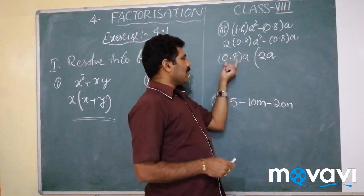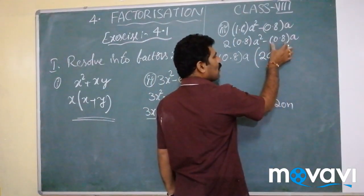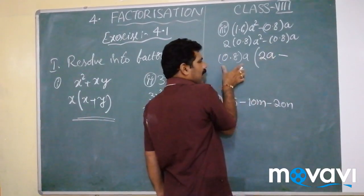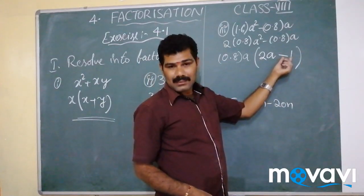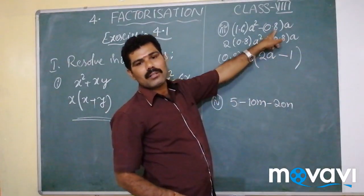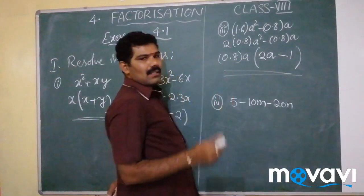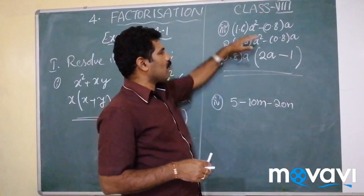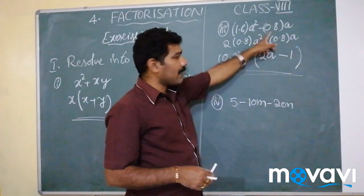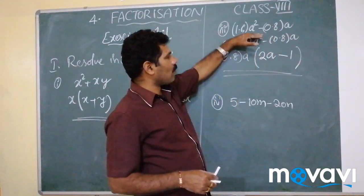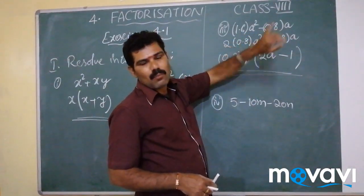With 0.8a taken outside: 0.8 × 2 = 1.6, and a × a = a², giving 1.6a²; then 0.8a × (-1) = -0.8a. So the factors are 0.8, a, and (2a - 1). Therefore 0.8a and (2a - 1) are the factors of 1.6a² - 0.8a.